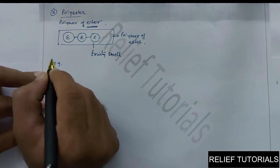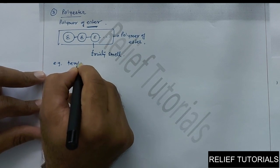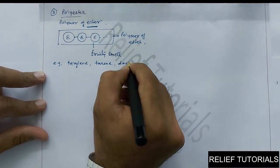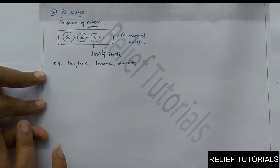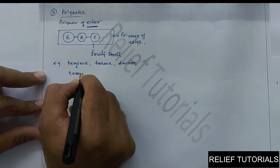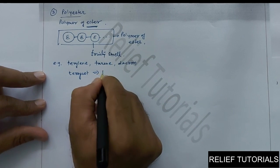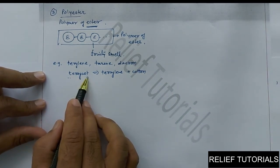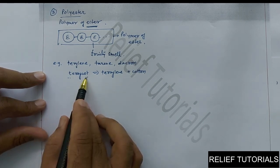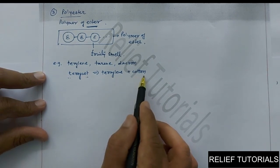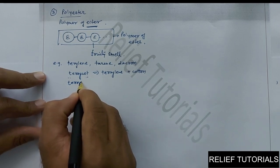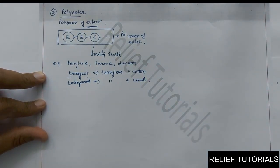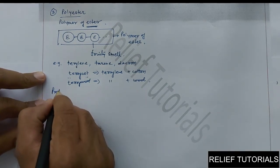Some examples of polyester fibers are Perlon and Dacron. Also, terricot — terricot is obtained by blending Perlon with cotton. The name itself suggests this, so if someone asks what terricot is, it is the fiber made from Perlon and cotton. Similarly, we have terry wool, which means Perlon plus wool.